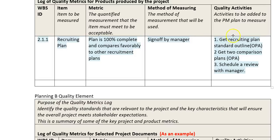What would we need to do in order to measure this? The first thing we'd have to do is figure out what 100% complete means. It would be nice if our organization had some standard outline that they use for recruiting plans. If they do, that's somewhere in the organizational process assets, so that every time someone is putting together a new class for a different type of student, they don't have to start from scratch.